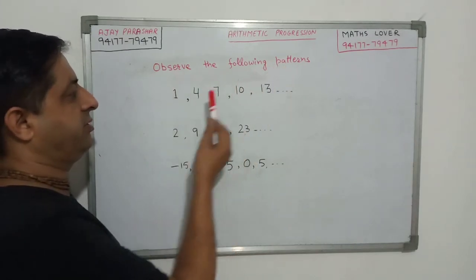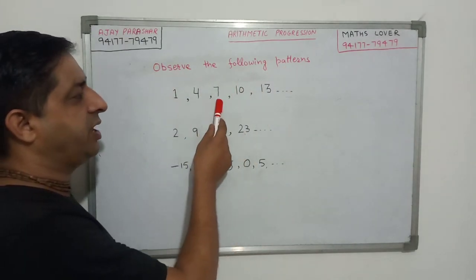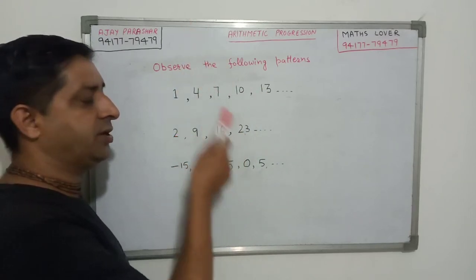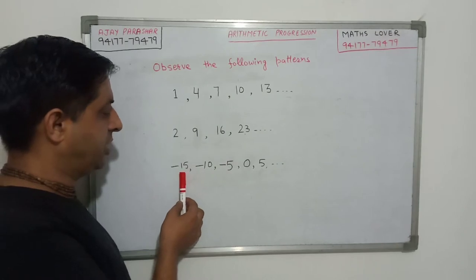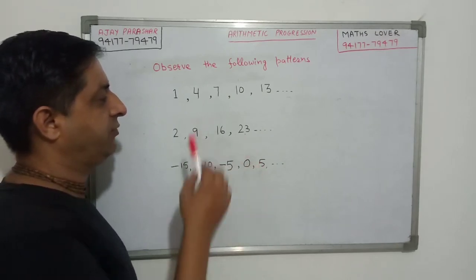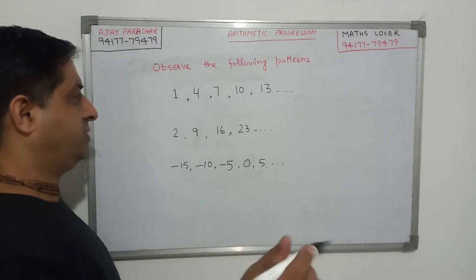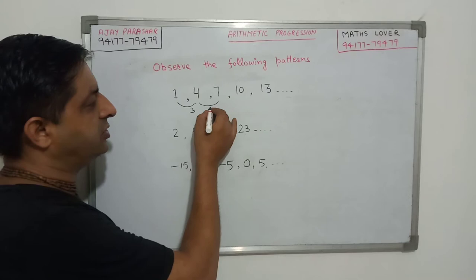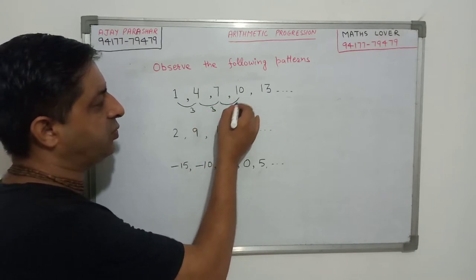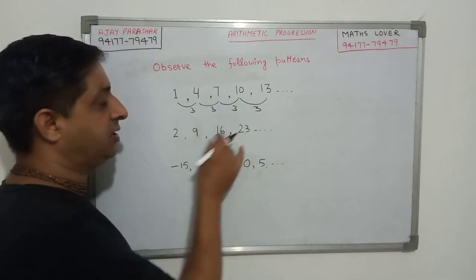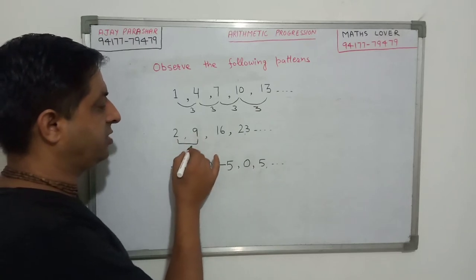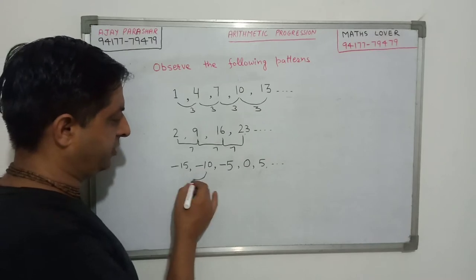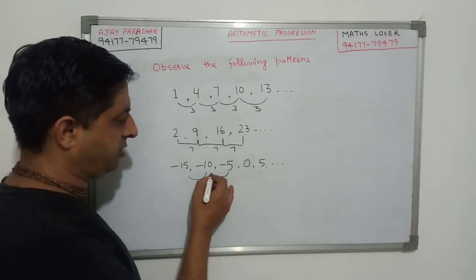Observe the following patterns: 1, 4, 7, 10, 13. Second sequence is 2, 9, 16, 23. And the third sequence is minus 15, minus 10, minus 5, 0, 5. Now please note that the difference between the two consecutive terms here is same in each sequence. In this sequence the difference is 3. In this sequence the difference is 7. And in this sequence the difference is 5.